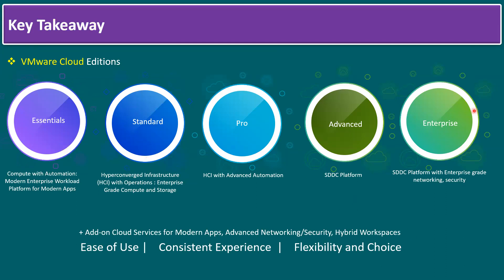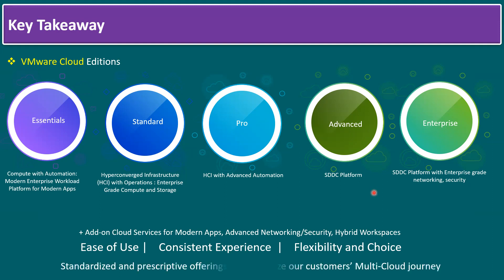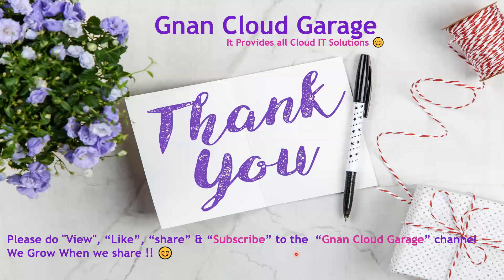Key takeaway: VMware Cloud Editions have five models — Essential, Standard, Pro, Advanced, and Enterprise. VMware Cloud Enterprise includes additional add-on cloud services for modern apps, advanced networking, security, and hybrid workspaces. The benefits are ease of use, consistent experience, flexibility, and choice — customers can choose based on their business requirements. These standardized offerings help modernize the multi-cloud journey. Thank you for watching — please like, share, and subscribe to Gnan Cloud Garage.